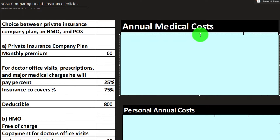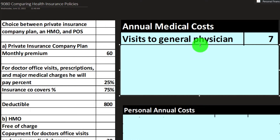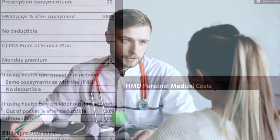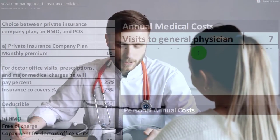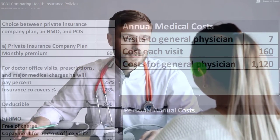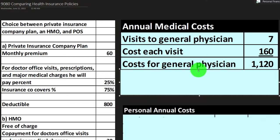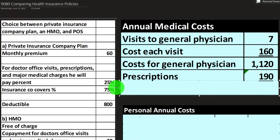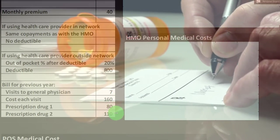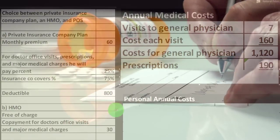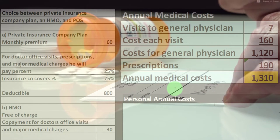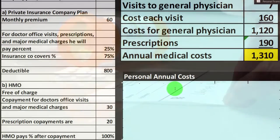Starting with annual medical costs: we had seven physician visits at $160 each, giving us $1,120 for the general physicians for the year. We also had two prescription drugs at $80 and $110, which gives us $190. That gives us total annual medical costs of $1,310. Now let's compare that to the personal annual costs for each plan.